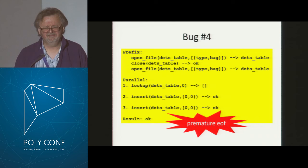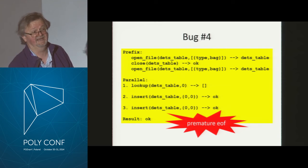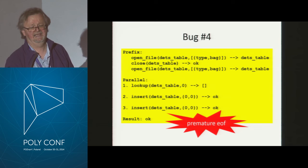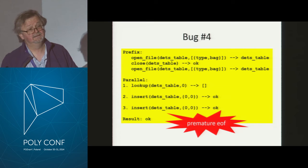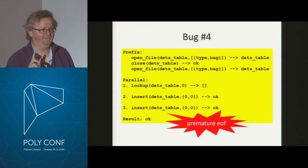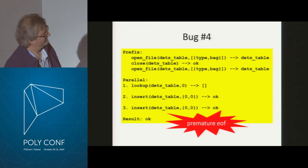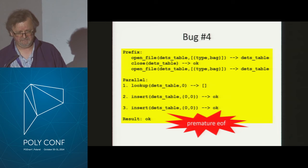I thought: this can't be a minimal failing test — open, close, open? It must be enough just to open the file. So I manually simplified the test case to just open the file in the prefix, and ran it tens of thousands of times. It passed every single time. Today I know why: at the start of the test the file does not exist — that first open creates the file. Then we close it. The second open opens an existing file — it's very slightly different, and that difference is critical to provoking the race condition. Likewise, you really have to do three things in parallel to hit that race.